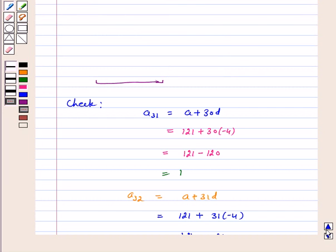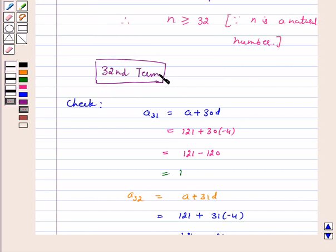So our answer for the above question is that the 32nd term of the AP is its first negative term. I hope the question is clear to you. Bye and have a nice day.